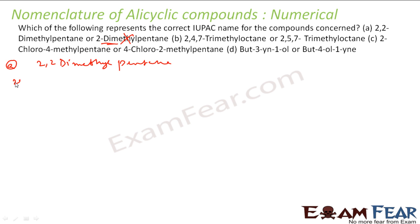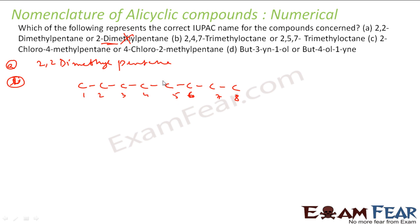Let us take the second one, option B: 2,4,7-trimethyloctane or 2,5,7-trimethyloctane. Let us draw octane — 8 carbons numbered 1 through 8. Trimethyl means at the 2nd, 4th, and 7th positions I have a methyl group. If you number the same structure in the reverse direction, those positions become 2, 5, 7. As per the rule, priority is given to the lower locant set, so 2,4,7-trimethyloctane is correct.